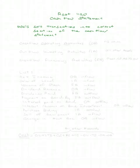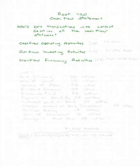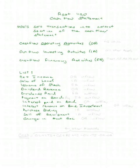My goal in this pincast is to help you learn how to sort transactions into the correct section of the cash flow statement. Remember, our cash flow statement has three main sections: cash flow from operating activities, cash flow from investing activities, and cash flow from financing activities. I'm going to list some transactions and I want you to tell me what section you would put it in: OA for operating activities, IA for investing activities, and FA for financing activities, and to tell me if it's an inflow or outflow.